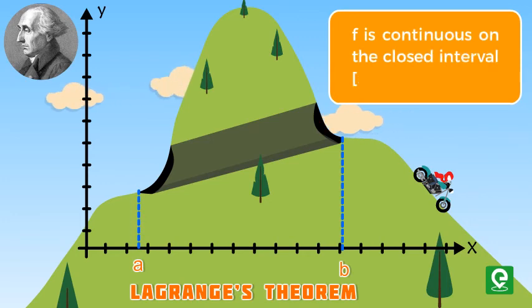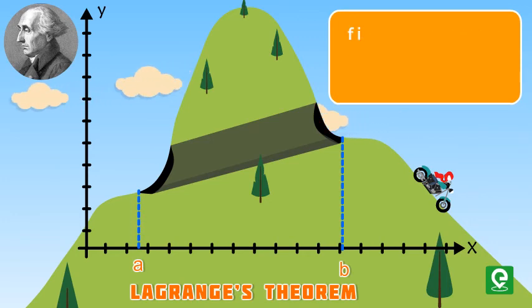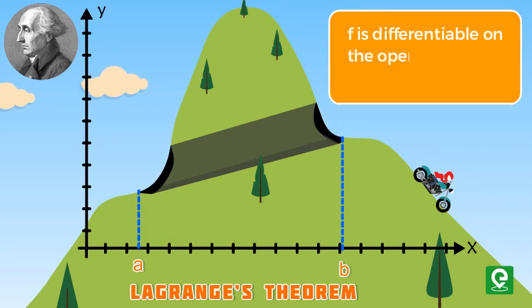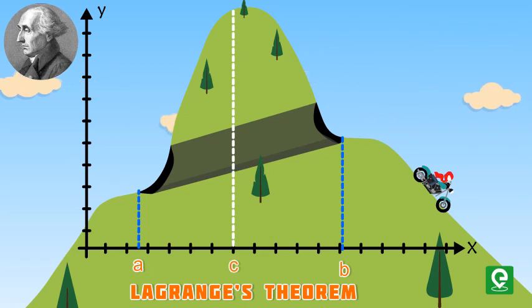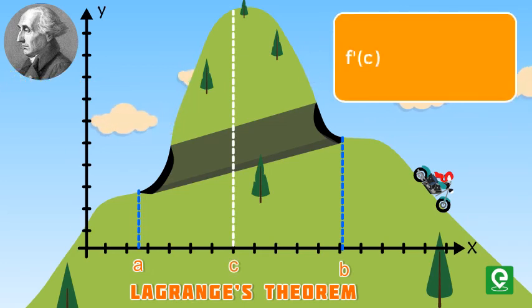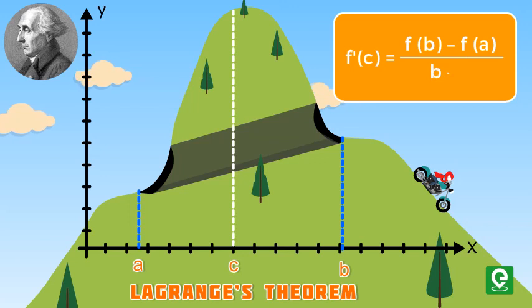According to Lagrange's theorem: f is continuous on the closed interval [a, b], f is differentiable on the open interval (a, b). Then there is a number c in between a and b such that f'(c) is equal to [f(b) - f(a)] / (b - a). In our next video we will solve few examples on Rolle's and Lagrange's theorem.